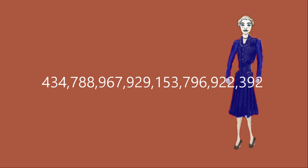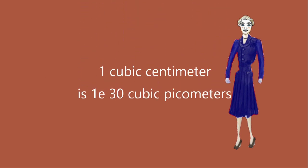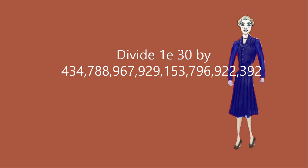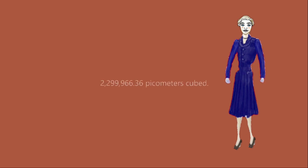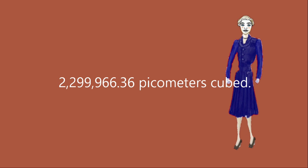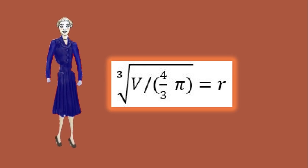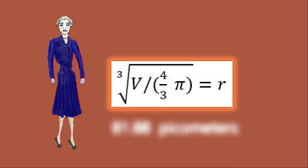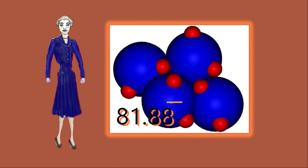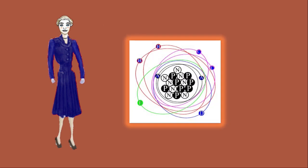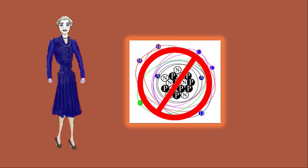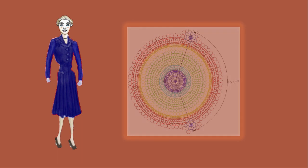1,000 cubic centimeters is 1 to the 30th picometers cubed. We divide that by 434.788 and we get 2,299,966.36 picometers cubed. The cube root of the volume divided by 4/3 pi gives the radius of 81.88 picometers, which is a better value of the separation radius. In finding another solution to the space occupied by a molecule other than electrons orbiting a nucleus in an excited state, we consider the molecule as a hard crystal and observe the possible physics.